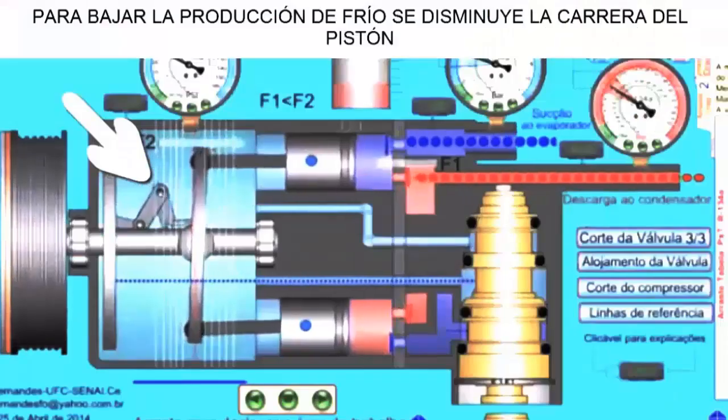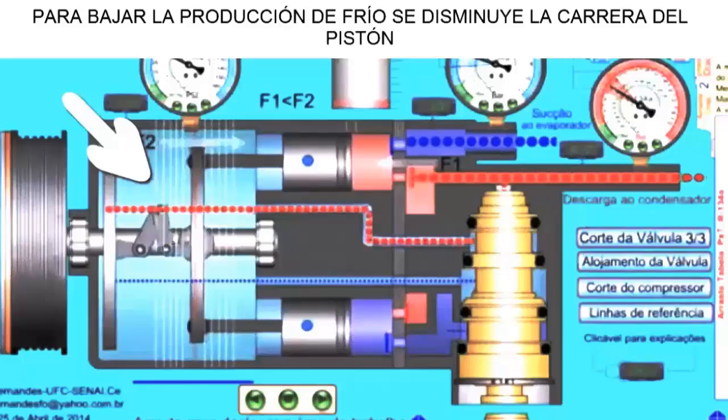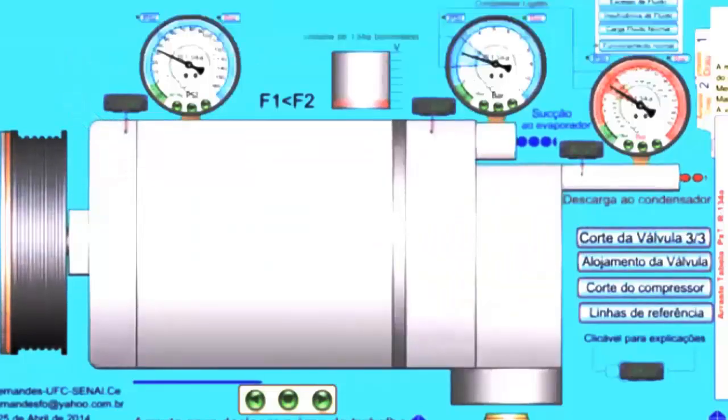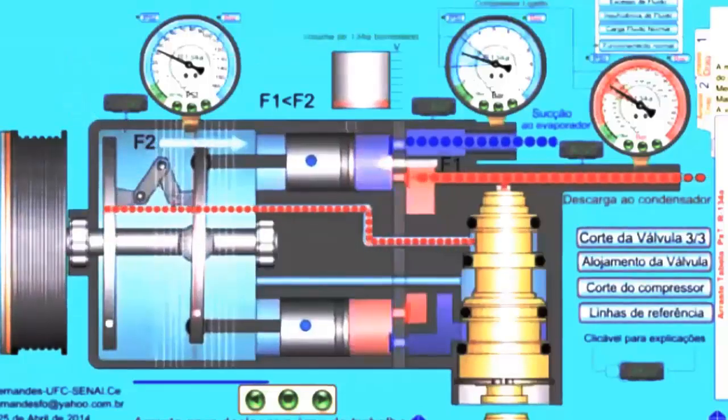A typical failure when the POA valve is damaged is that the vehicle's air conditioning cools at high speed but not at low speed in traffic. The air conditioning takes 10 to 20 minutes to start cooling, but then operates correctly.